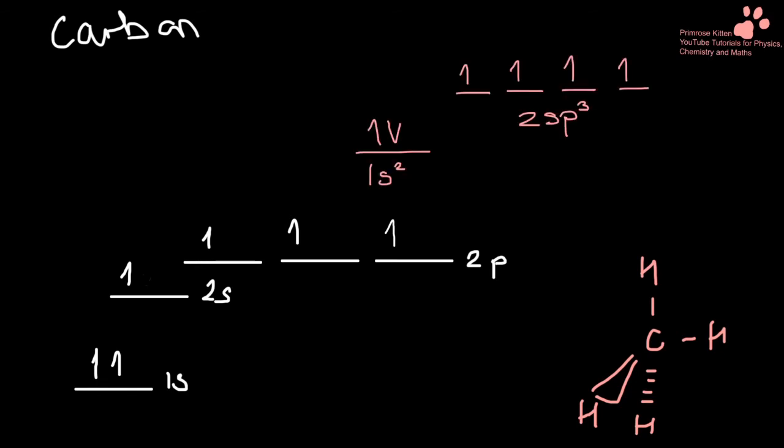Now we have four identical spaces for electrons to go into. These are the four identical 2sp3 orbitals. And I put one electron in there, one electron there, one electron there, and one electron there. And you can see they're all the same. And this is how we form sigma bonds, or single bonds.